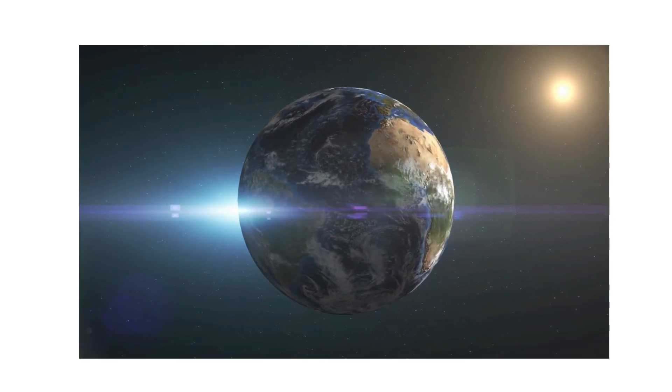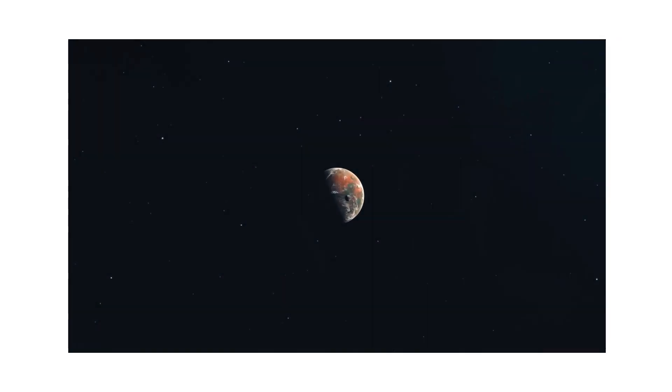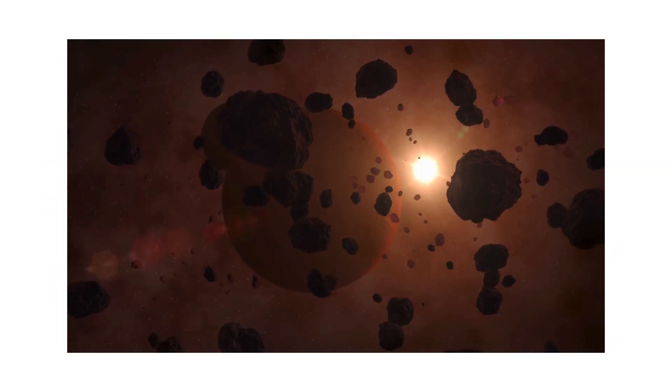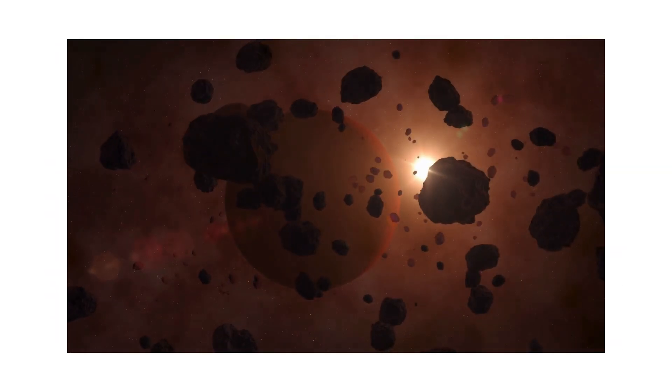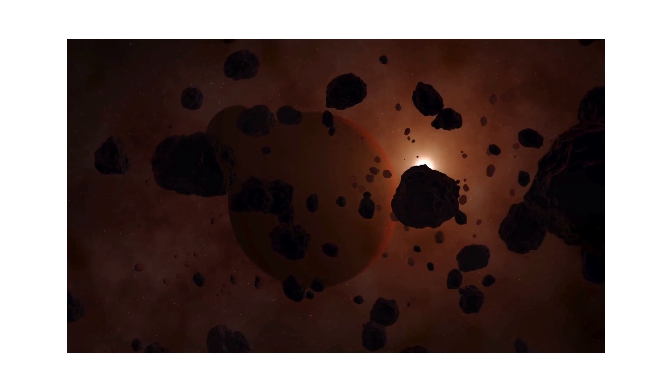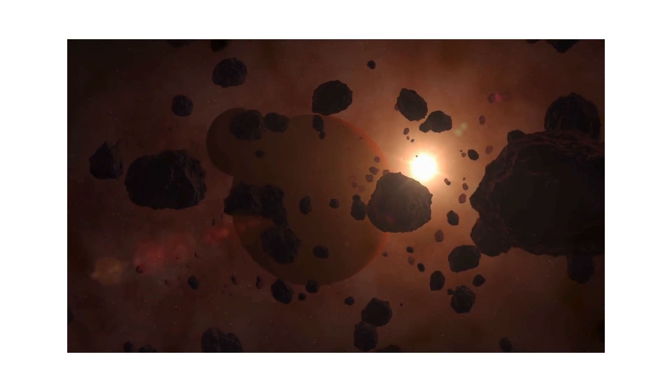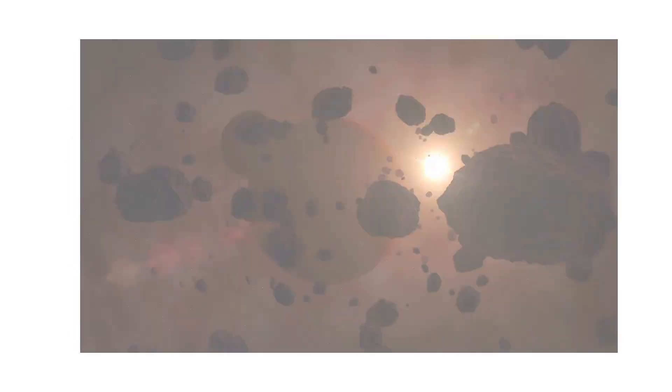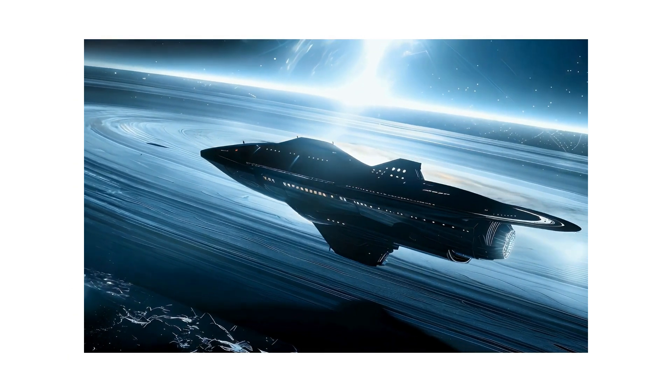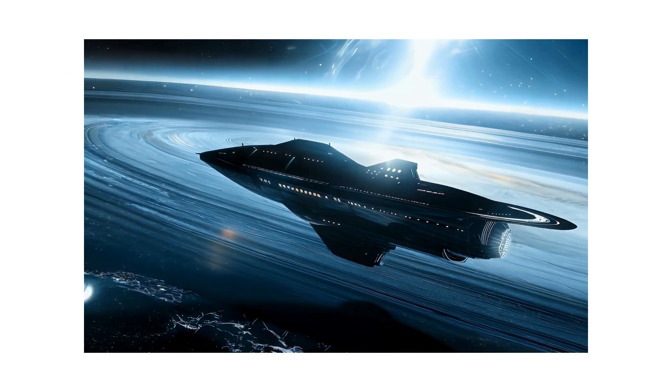Sagittarius A*, the supermassive black hole at the center of the Milky Way, is about 26,000 light years from Earth. At its current quiet state, it is harmless. If it entered a quasar phase, the radiation would still be diluted by distance, but regions of the galaxy closer to the core could face disrupted star formation and elevated radiation levels. Earth's position in the outer disk provides a protective buffer.